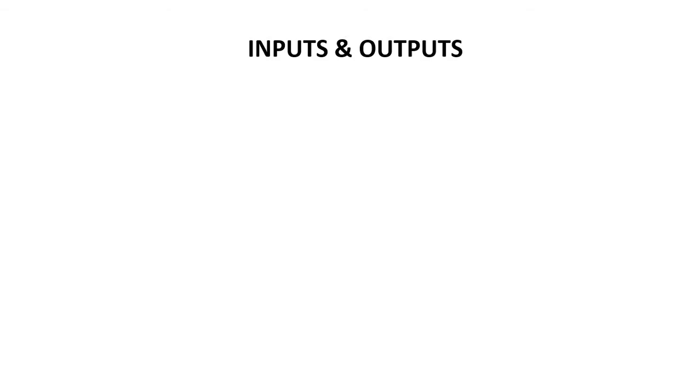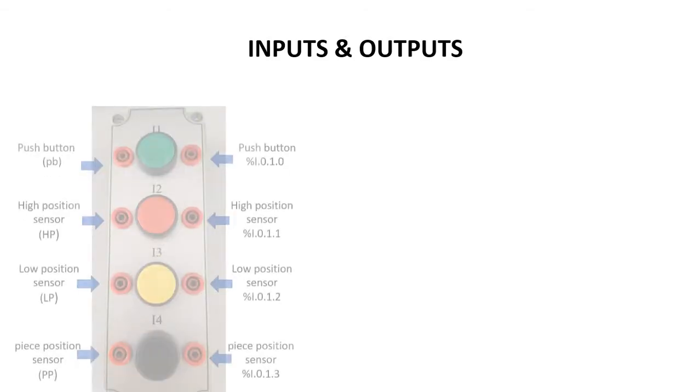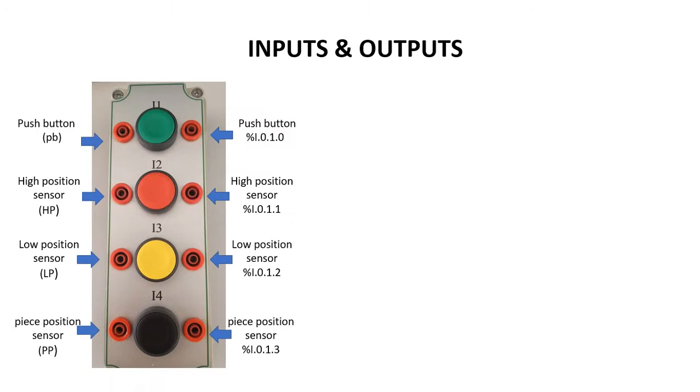So till now we might have worked with the ladder logic diagram — same Unity Pro you are going to use. So for that you have to use the Unity Pro software. Now we will see the hardware configuration, which is nothing but the input and output list. In the inputs we have: push button, high position sensor, low position sensor, and work piece position sensor. In short, we may name them as PB, HP, LP, and PP.